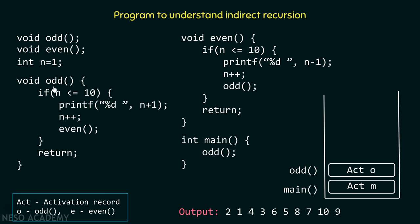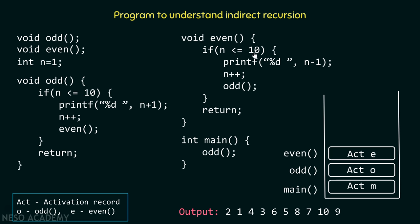Inside the odd function we check: is n less than or equal to 10? Since n is initially 1 and 1 is less than 10, the condition is satisfied. We print value 2 on the screen. Then we increment n so it becomes 2 and call the even function. Control transfers from odd to even and the activation record of even gets stored on the stack. Inside even, n equals 2 which is less than 10, so we print value 1 (2 minus 1). Then we increment n to 3 and call the odd function again.